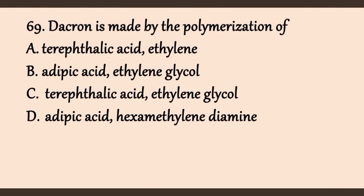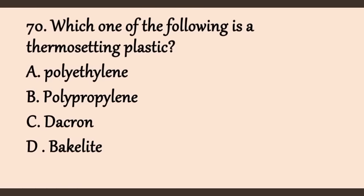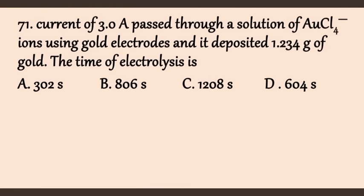Question 70: Which of the following is a thermosetting plastic? Options: A) polyethylene, B) polypropylene, C) Dacron, D) Bakelite. The only example of thermosetting plastic among these is Bakelite; the others are thermoplastics. The answer is D, Bakelite.